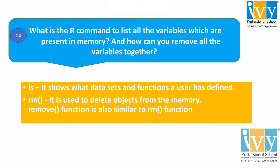We can remove all the variables together by using the rm function. The rm function is used to delete objects from the memory. We can also use the remove function, which works similarly to the rm function.